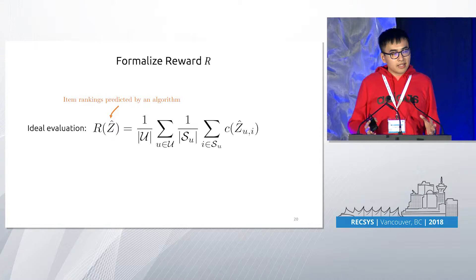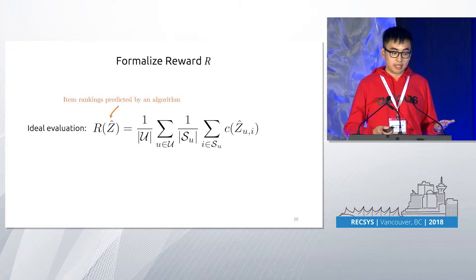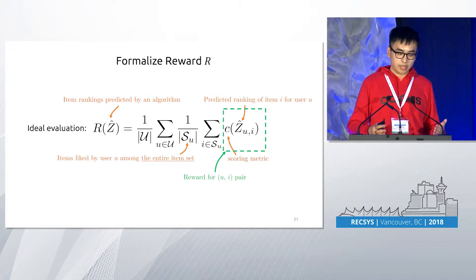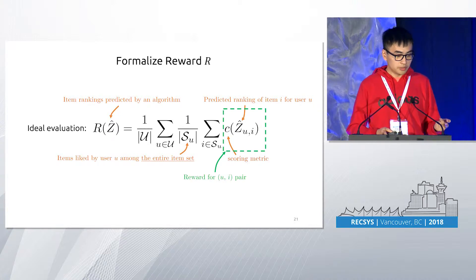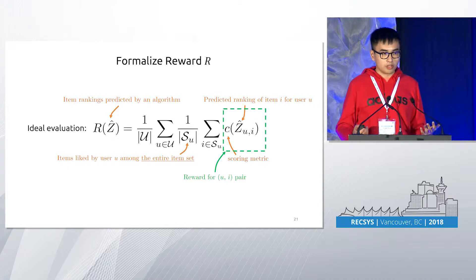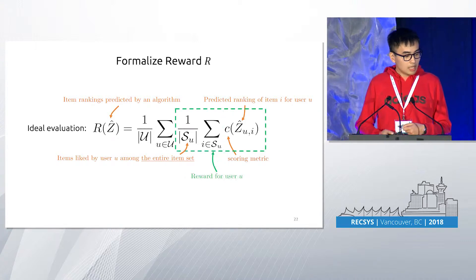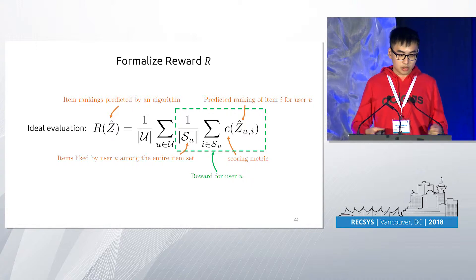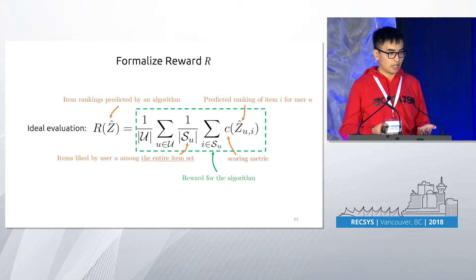Ideally, an unbiased evaluation of an implicit feedback recommendation system should work as follows. Given the item rankings predicted by an algorithm, denoted as Z-hat, the reward function first calculates the reward for each user-item pair, where the item is from those liked by the user from the entire item set, denoted as SU. The function C here can be any scoring function — AUC, recall, or DCG. We then calculate the average reward for each user, and the reward for the algorithm is an average across all users. However, this set SU is unobservable because there are so many items that users didn't have a chance to be exposed to.